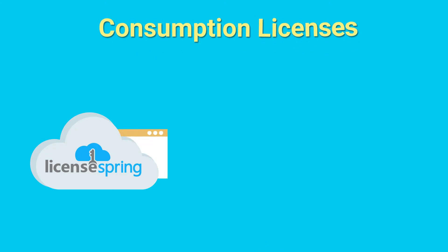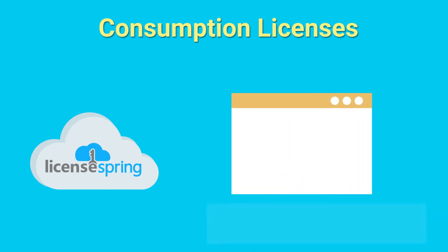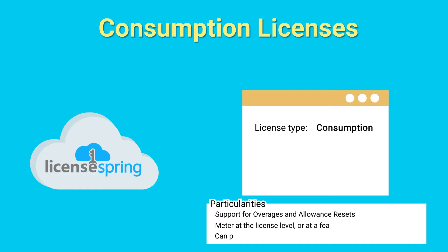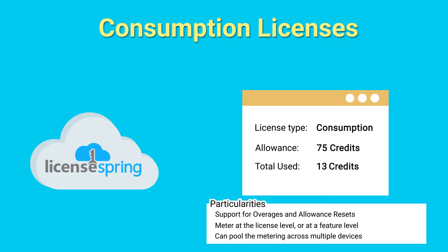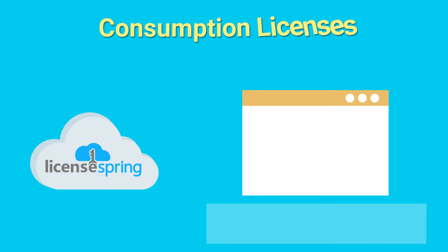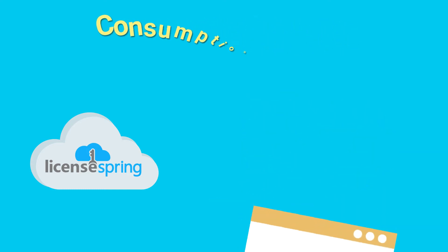Consumption licenses, also known as usage metering, allow you to implement a pay-per-use model. This can be defined for almost anything, like number of logins, number of times a report has been generated, or number of minutes that a service has been used for.